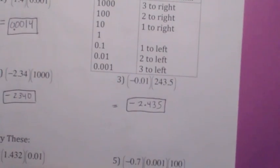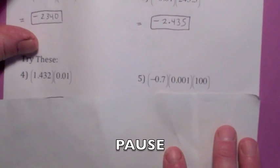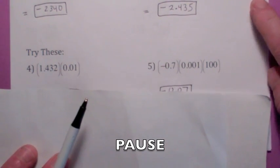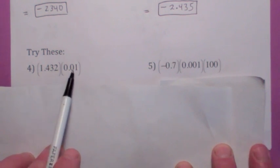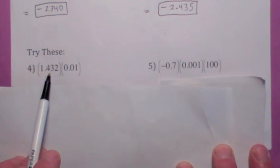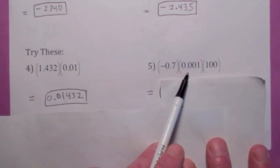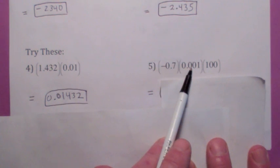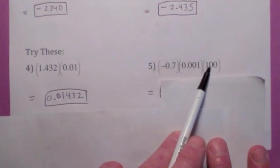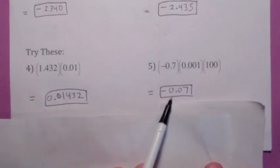Why don't you try these two. Go ahead and work them. On the first one, you're going to move the decimal 2 to the left — making it smaller. You should get that answer. The second one is kind of interesting because you're doing two things: this moves the decimal 3 to the left, but this moves the decimal 2 to the right — so the net difference is moving it 1 to the left.